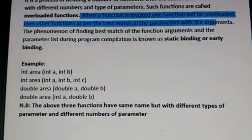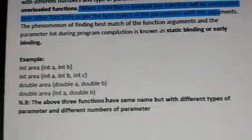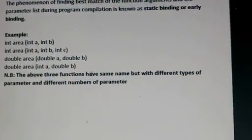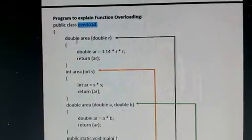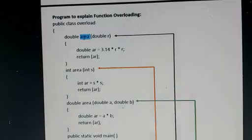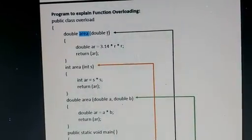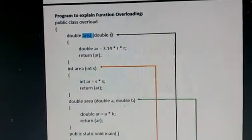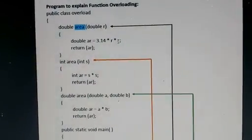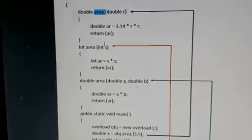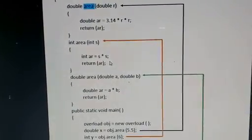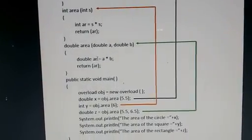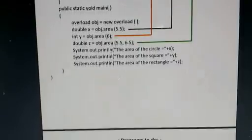As per the data input, the particular area function will be called. In the example given, one class is taken — Overload. The first function has a double return type, function name is area, and takes one double variable. It calculates 3.14 × r × r for the area of a circle, then returns ar. Another function is int area(int s), where ar = s × s, return ar. Another is double area(double a, double b), where ar = a × b, return ar.